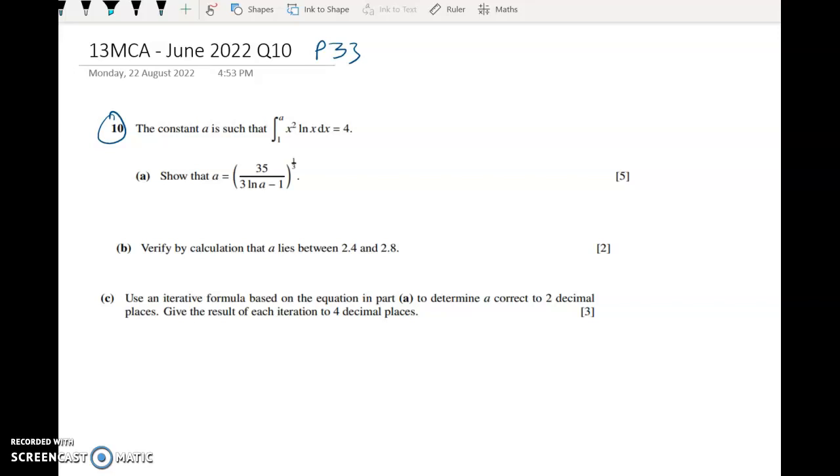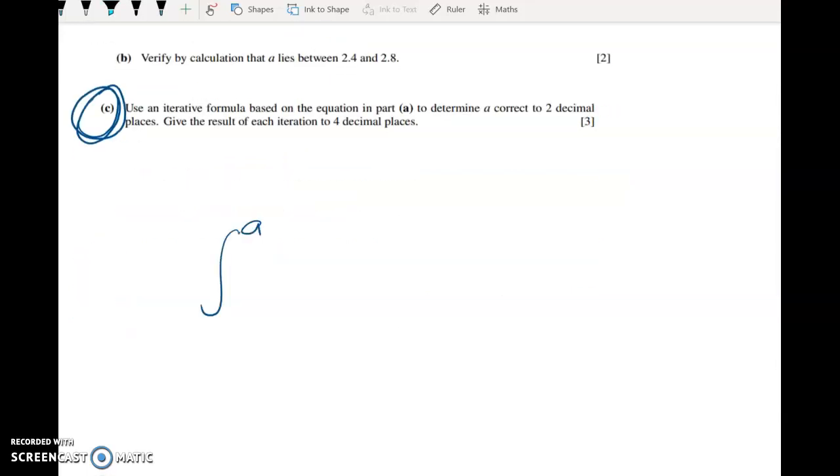So it looks like it's going to be quite a yucky integration by parts question, but it turns out to be pretty easy if you just spot which way around you have to go. So we've got an integral here where one of the limits of integration is A, and we're told that constant is such that the integral of this thing here is equal to 4.